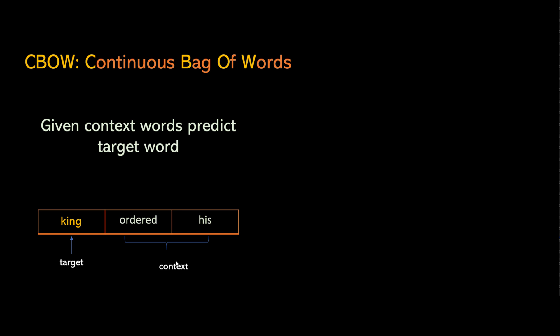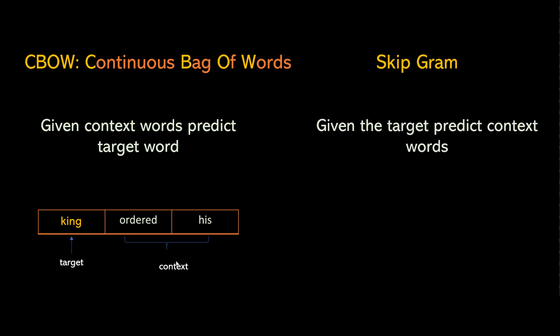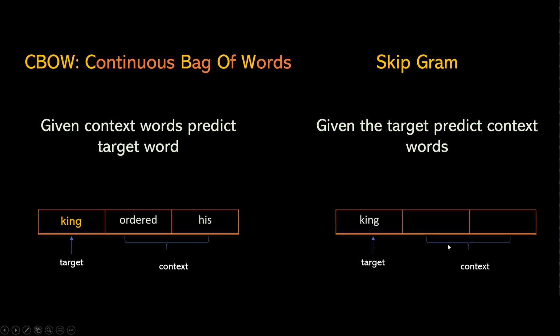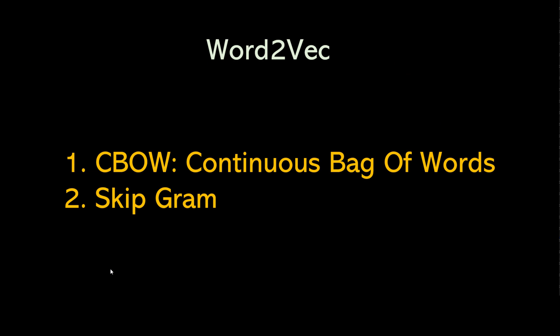There is a second methodology called skip-gram. In skip-gram we do the reverse — we have a target word 'king' and based on that we try to predict the context 'order his.' Predicting target from context and context from target are both fake problems. We're not interested in solving those problems; while solving them, as a side effect, we get word embeddings. Word2Vec is not a single method — it could use either Continuous Bag of Words or skip-gram to learn word embeddings. The word Word2Vec means convert a word to a vector.